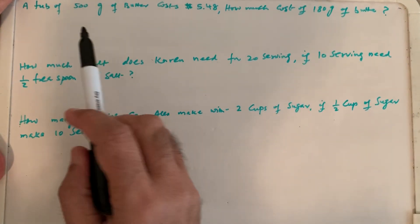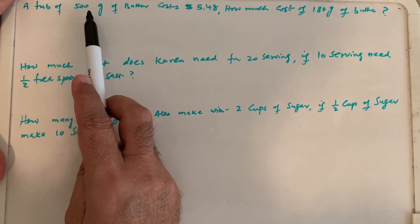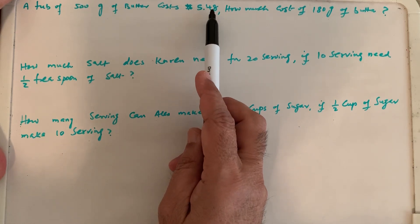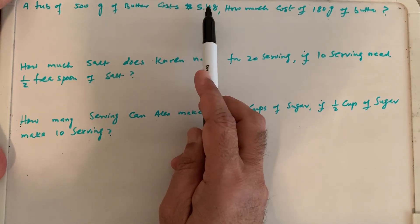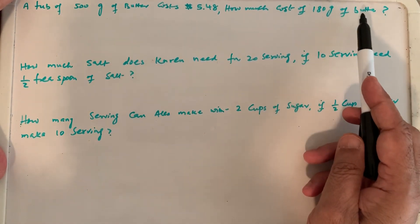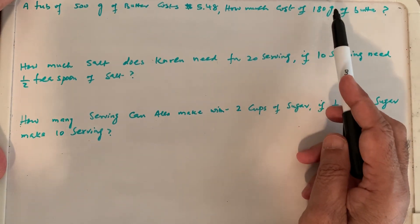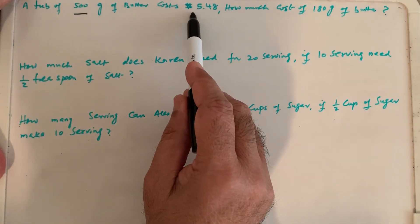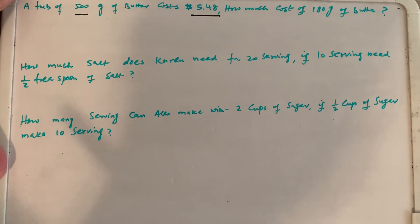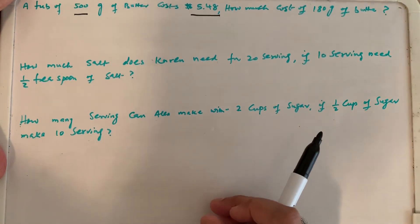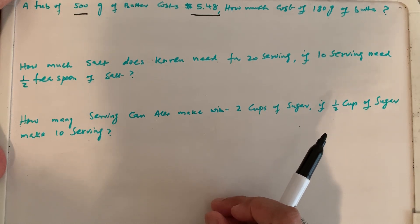A few word problems are here. A tub of 500 grams of butter costs $5.48. How much does 180 grams of butter cost? So what is given is 500 grams versus the dollar value. We can do it in two ways, but the easy way is creating a ratio between the two quantities.